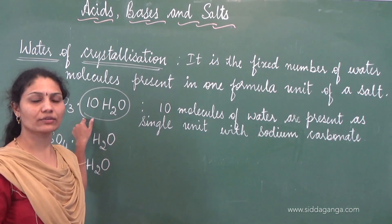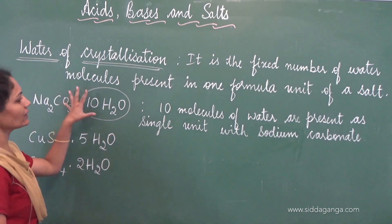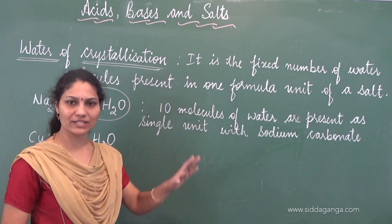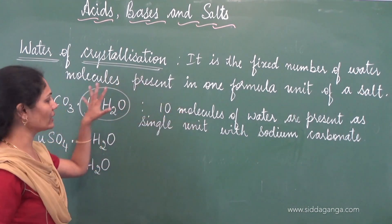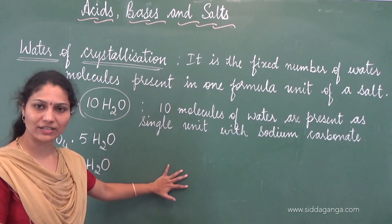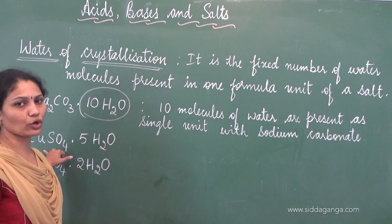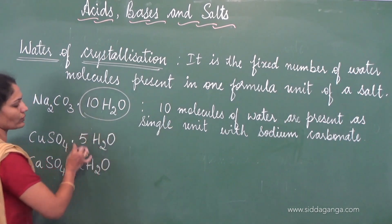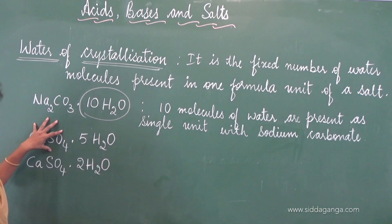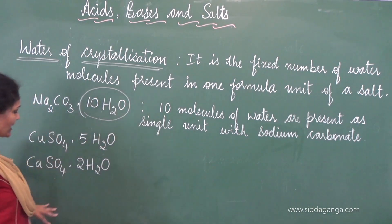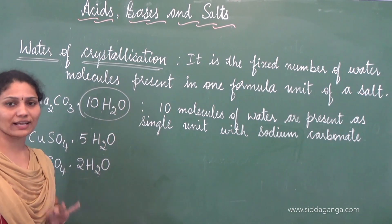The given salt here is washing soda. For this particular salt, 10 molecules of water are present as a single unit with sodium carbonate — that is the water of crystallization. With CuSO4, that is copper sulfate, 5 molecules of water are present as water of crystallization for a unit of CuSO4. Whereas in another case, CaSO4 has 2 molecules of water referred to as water of crystallization.